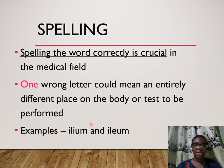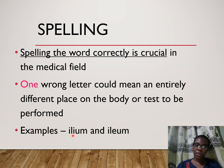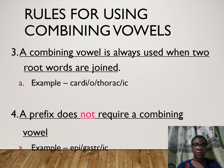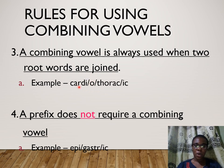It's also important that when spelling, especially when combining words, one wrong letter could mean an entirely different place in the body or an entirely different test. For example, 'ilium' is a bone in the pelvic region, while 'ileum' is a part of the intestine. Rule three: a combining vowel is always used when two root words are joined together. The example used earlier was 'cardiothoracic' — the combining vowel 'o' allows these two root words to be easily joined and pronounced.